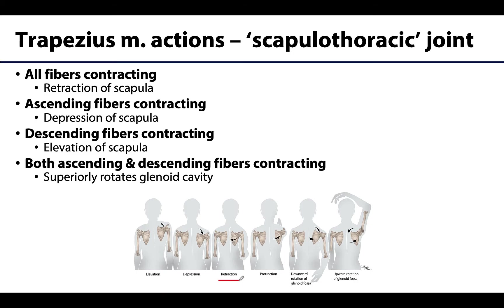If all fibers are contracting in unison with that middle part playing the biggest role, there can be retraction of the scapula — that posterior medial movement, bringing the medial portions of your scapula together. With the ascending fibers, this can lead to depression of the scapula, while the descending fibers will elevate the scapula. If the ascending and descending fibers contract together but not those middle fibers, there can be upward or superior rotation of the glenoid fossa, lending to a full range of abduction or flexion at the shoulder joint.